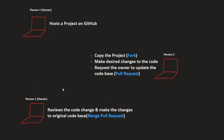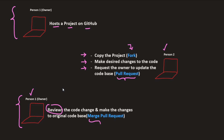Let's understand this concept again with a diagram. Person1, the owner of the repository, hosts a project on GitHub. Person2, who is interested in contributing, can fork that project and make all the desired changes. After making changes, he can request the owner to update the code base — this is generating a pull request. Person1 will get notified with the changes made by person2, and the owner can review those code changes and merge the pull request, making the changes to the original code base.